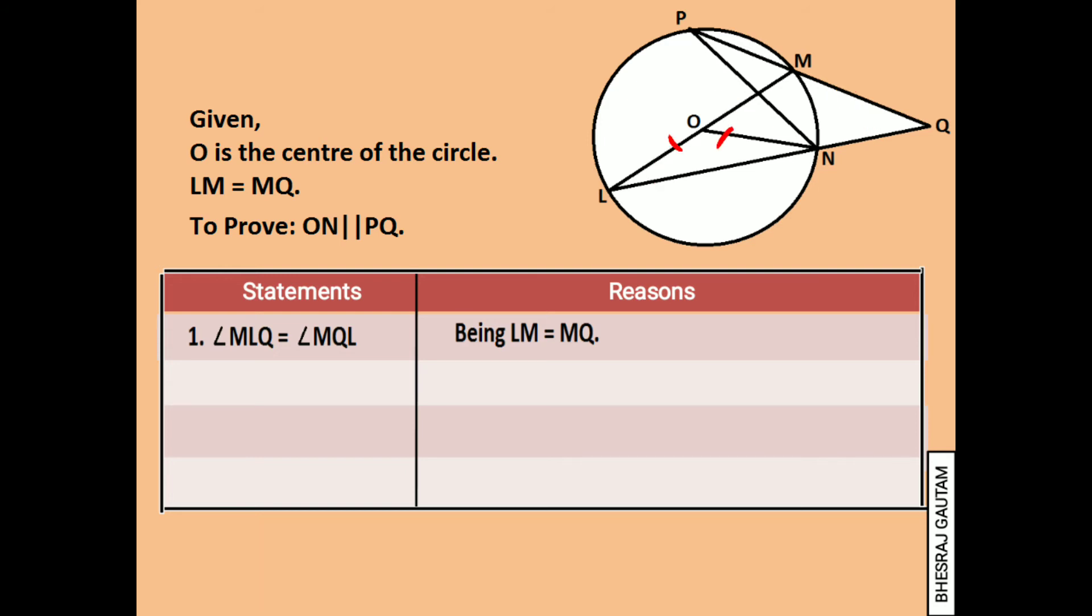ON and OL are the radii of same circle and they are the two sides of a triangle OLN. This means they form equal base angles. Hence, we can now write angle MLQ is equal to angle ONL as shown on the screen.